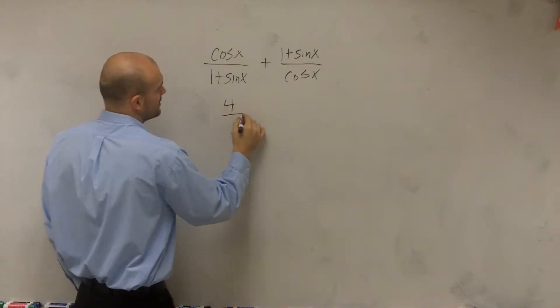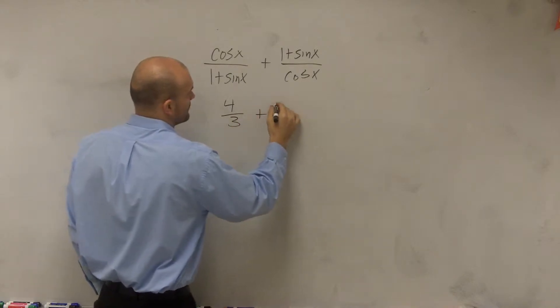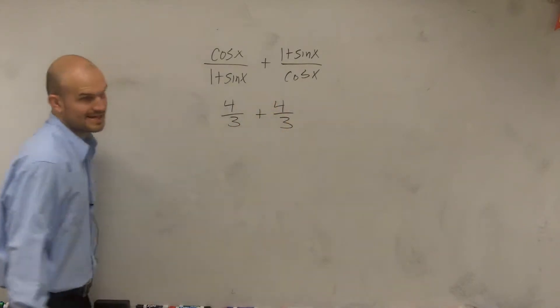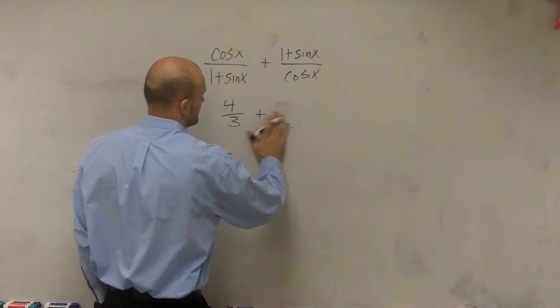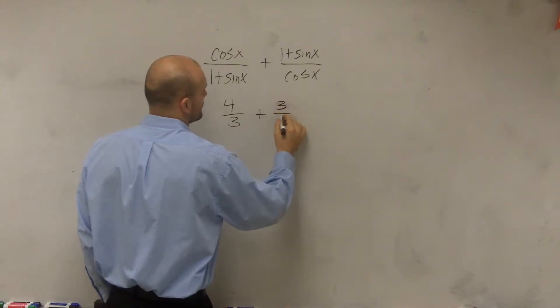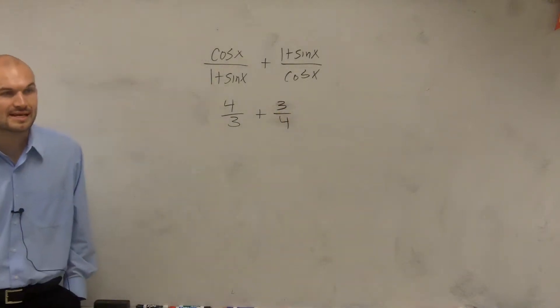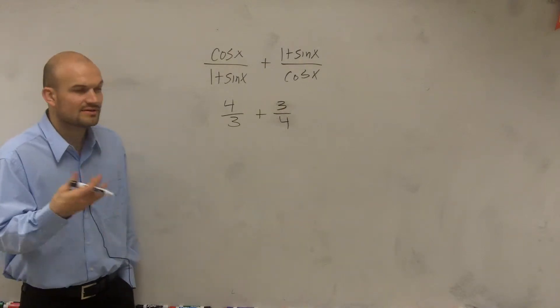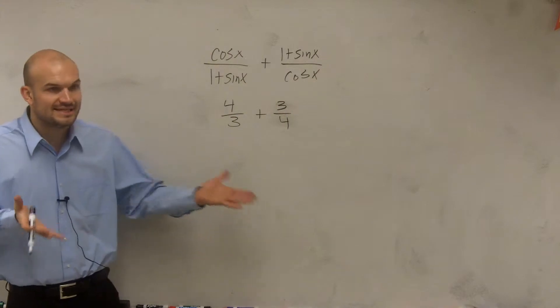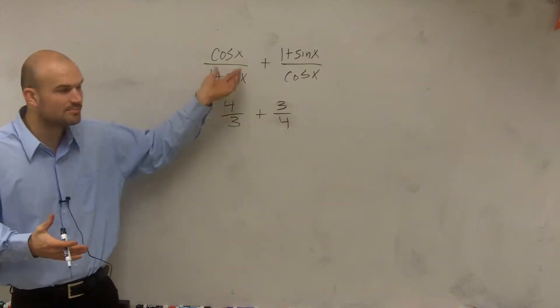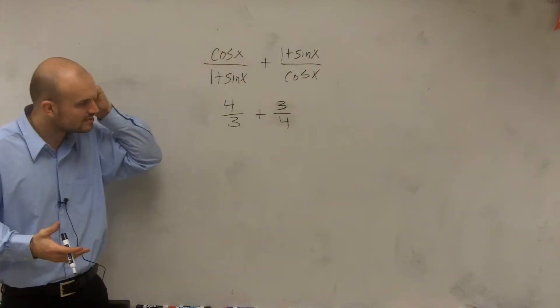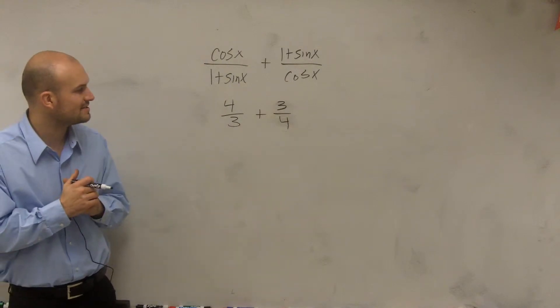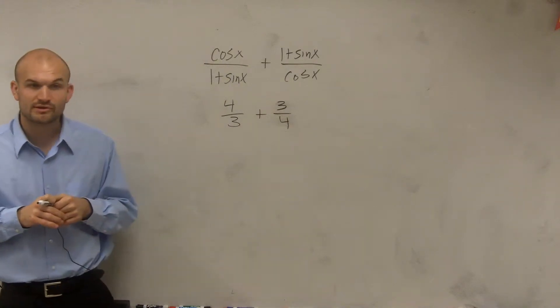So let's just pretend it was something like this. This is a much easier example. This kind of represents the same thing with regular numbers. Whenever I get confused, I like to think about this with easier numbers. Let's look at what I would do if I had asked you to add 4 thirds plus 3 fourths.